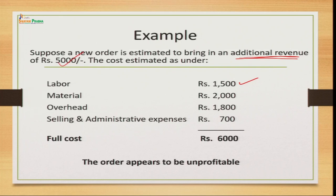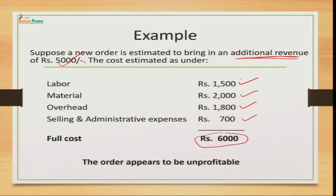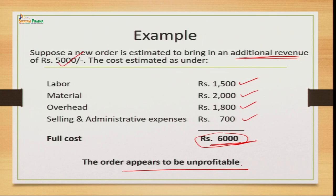There will also be overhead expenses for electricity and machinery wear and tear, plus selling and administrative expenses of 700 rupees. The total comes to 6,000. For an order worth rupees 5,000, your full cost is 6,000. So will you accept this order? Definitely no — the customer is giving you 5,000 but execution costs 6,000, making the order appear unprofitable.